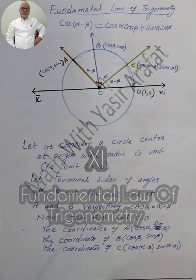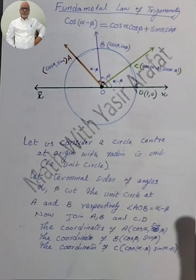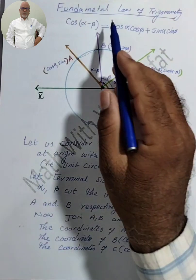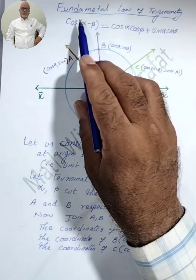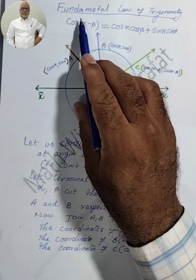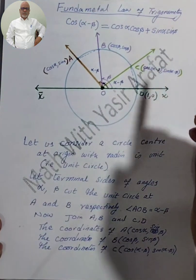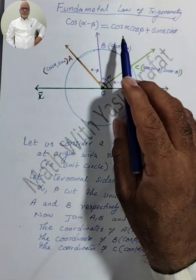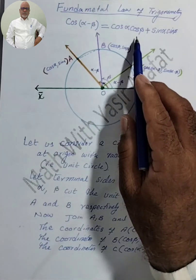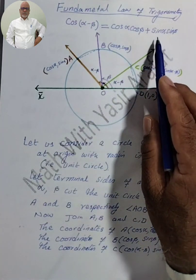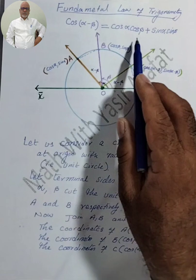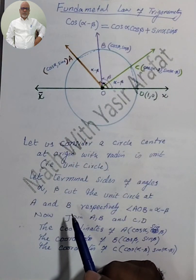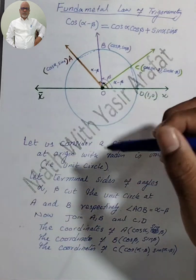Bismillahirrahmanirrahim. My dear students, Assalamu Alaikum. You are watching Math with Yasir Arfad. Today we are going to discuss a very important derivation — the fundamental law of trigonometry, that is cos(α - β) = cos α cos β + sin α sin β. This law is called the fundamental law of trigonometry.